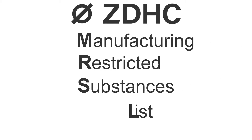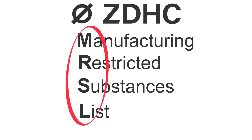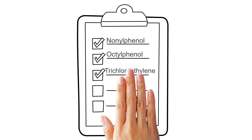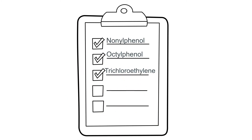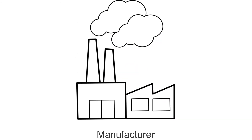The ZDHC Manufacturing Restricted Substances List — ZDHC MRSL for short — is a list of priority chemicals restricted from intentional use by manufacturers.